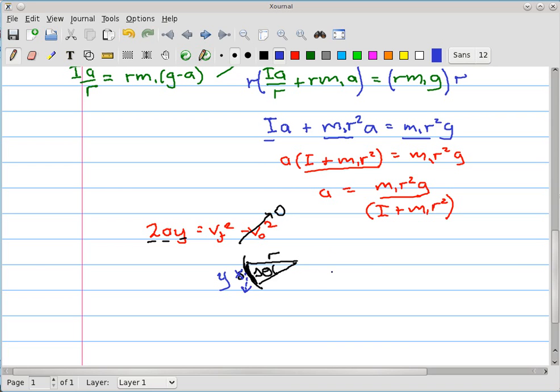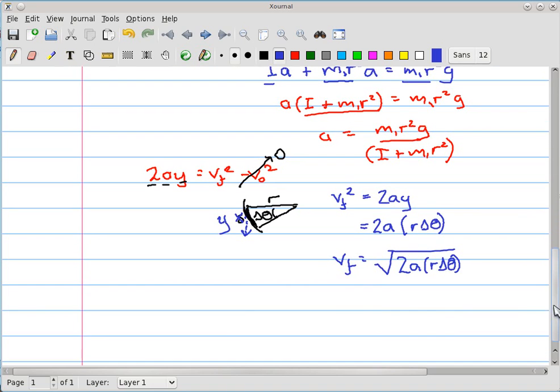So what we can do therefore is we can write vf squared equals 2 ay. That's equal to 2a times r delta theta. There's our y. And so vf is equal to the square root of all of this stuff. That's equal to the square root of 2a r delta theta. So, so far so good. So let's make use of some of these equations. The ones that we're going to use in our scratch pad are these. We're going to solve for an acceleration so the formula don't get too long. And then having the acceleration, we're going to use this equation. So basically we're going to make use of two equations and then get a final answer. Awesome.